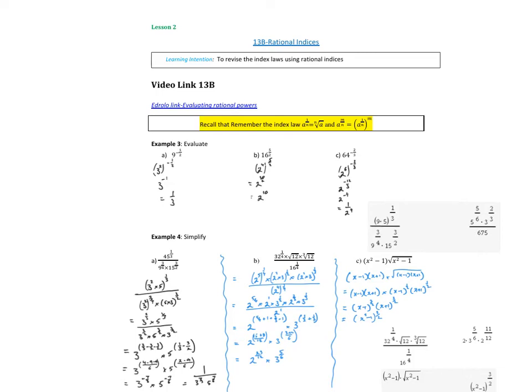All right, so rational indices is just really making use and remembering the relationship here that the nth root, so the square root is one that we use a lot of, isn't it? So the square root of 2 is 2 to the half, the cube root of 4 is 4 to the one third, and in fact, the nth root of a is a to the one on n.